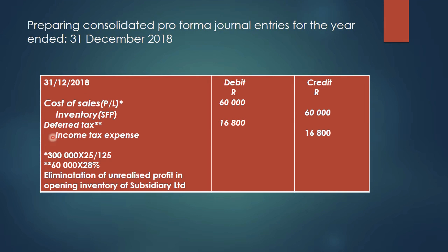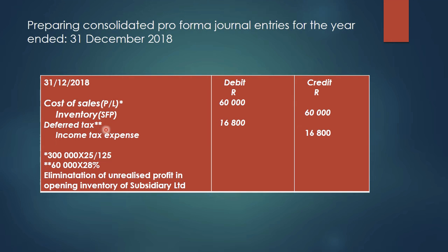This is how we go about the actual consolidation for the proforma journals. We date it 31 December 2018. We debit Cost of Sales by 60,000 and credit Inventory by 60,000. The transaction is also subject to tax — 16,800 — and we credit Income Tax Expense with 16,800.